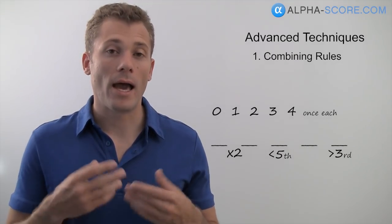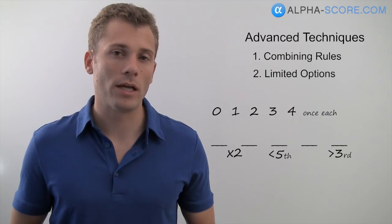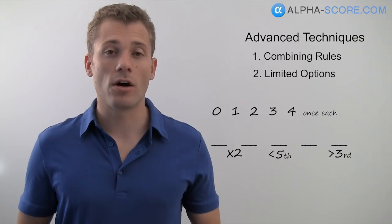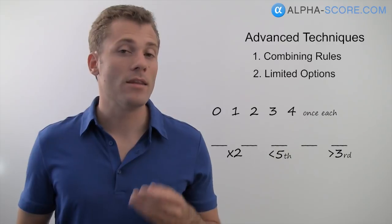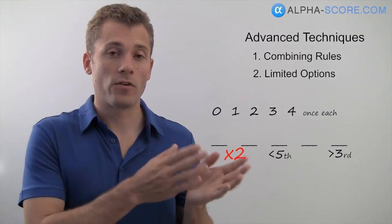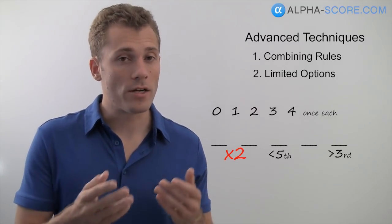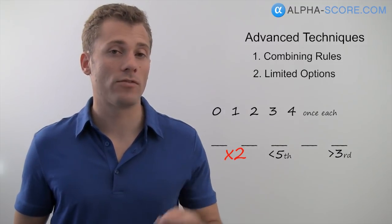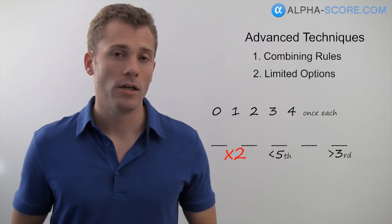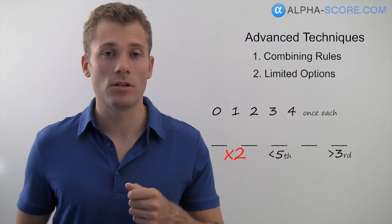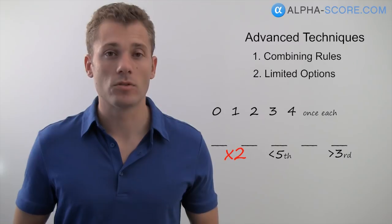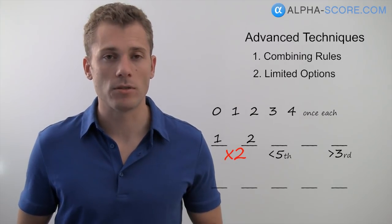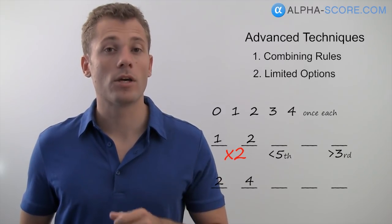The second technique is called analyzing for limited options. Go through your rules and find the most restrictive rule — the one giving you the fewest options for where you can place things. In this game, the rule that the second spot is exactly two times the first is very limiting. If we try zero in the first spot, zero times two is zero — we can't use zero twice. If we put one in the first spot, one times two gives us two in the second spot — that's our first option. If we put two first, two times two is four — that's our second option.